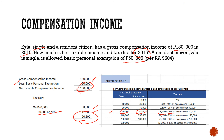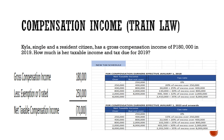So titignan natin dito sa tax schedule natin saan papasok yung taxable income ni Kyla. ₱130,000 — dito sa bracket ng ₱70,000 to ₱140,000. Ang income tax rate ng bracket na ₱70,000 to ₱140,000 is flat rate na ₱8,500 plus 20% ng excess ng taxable income sa ₱70,000. Ilan ba yung excess ng ₱130,000 sa ₱70,000? Yun ay ₱60,000. So multiply natin by 20% yung ₱60,000 — meron tayong ₱12,000. So yung total tax due ni Kyla for the year 2015 is ₱20,500.